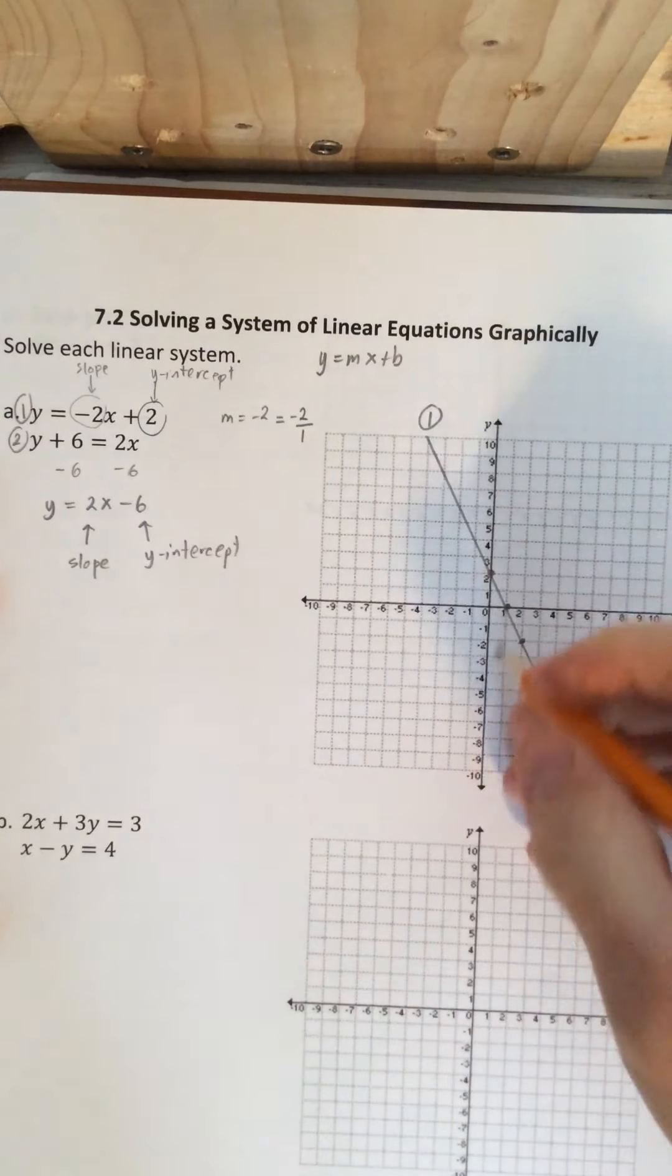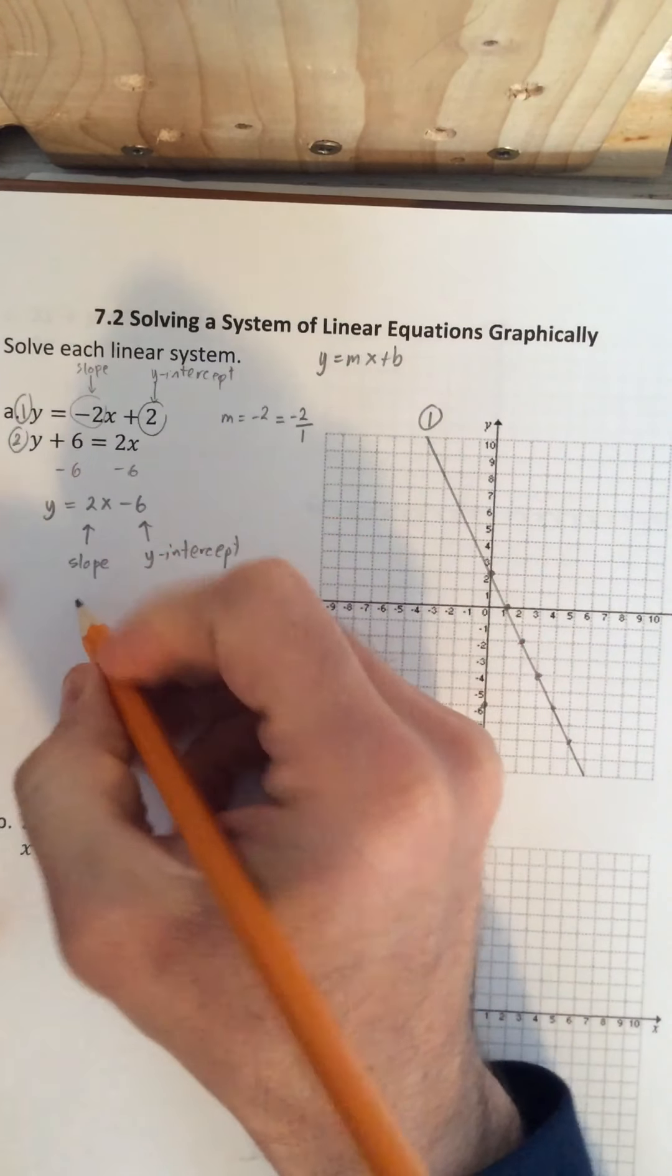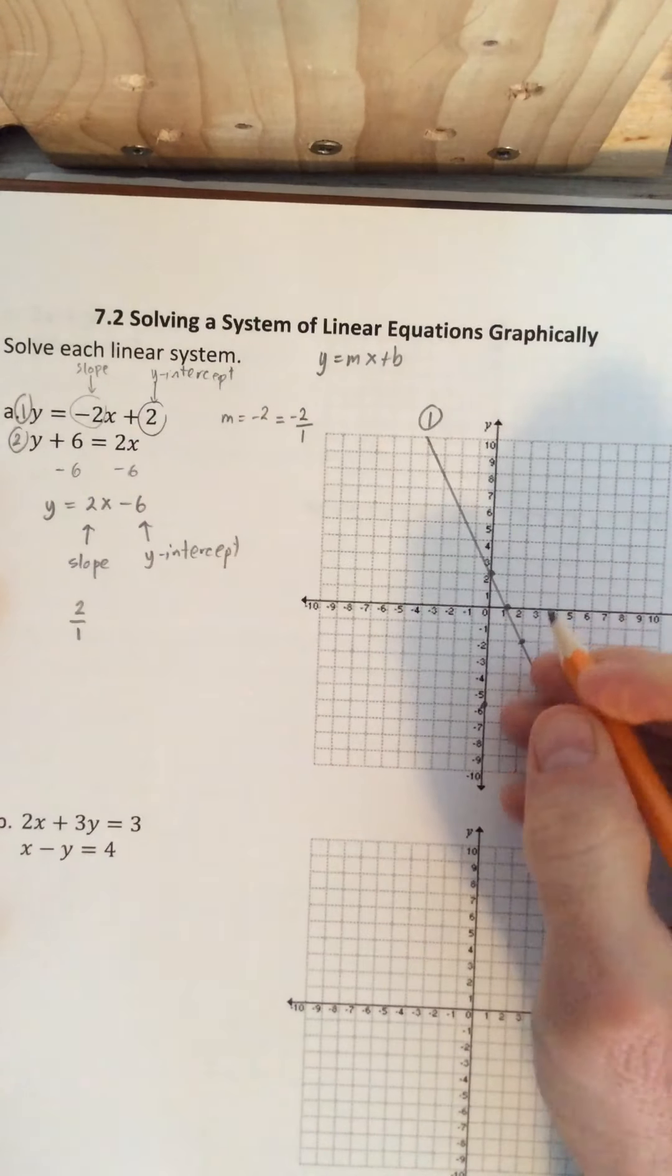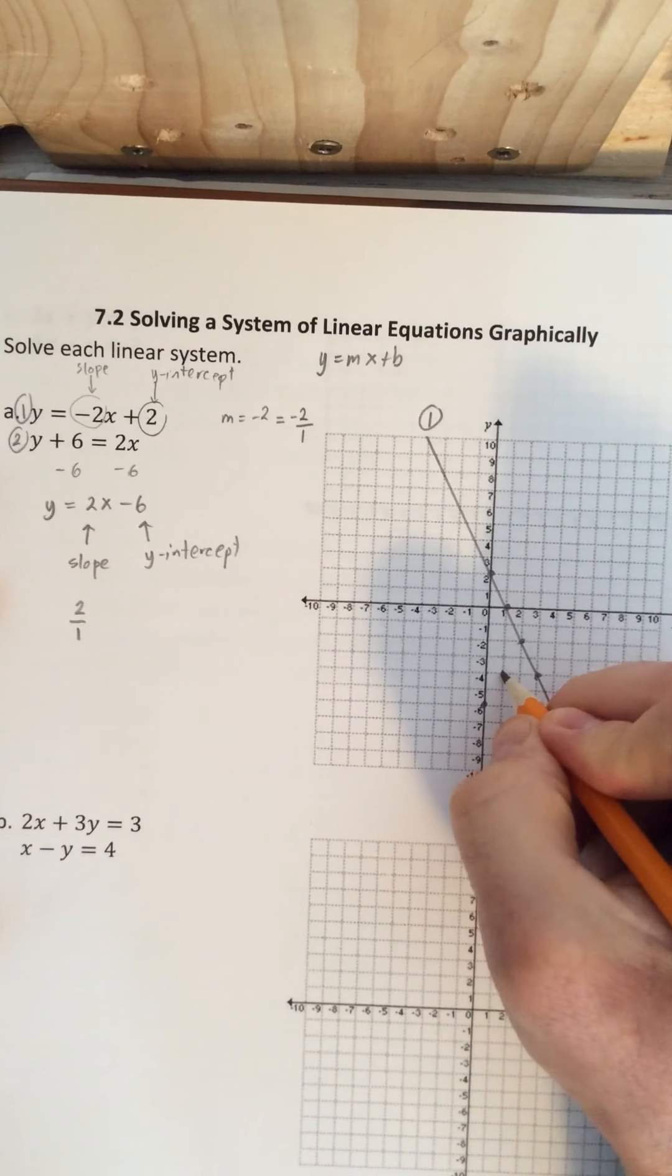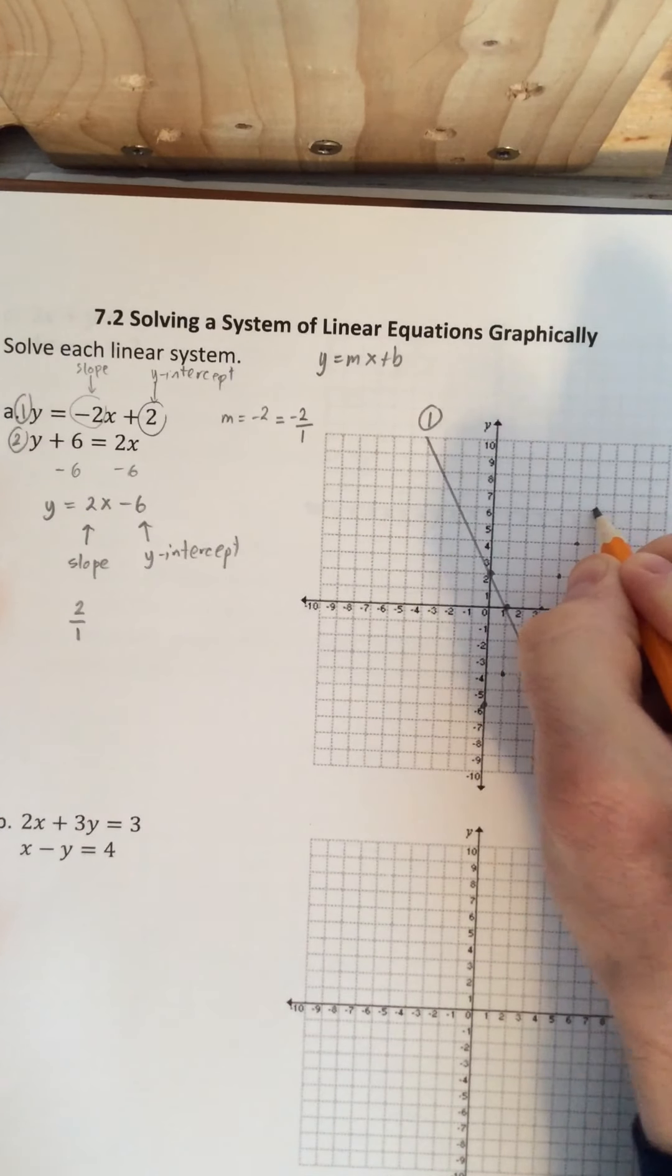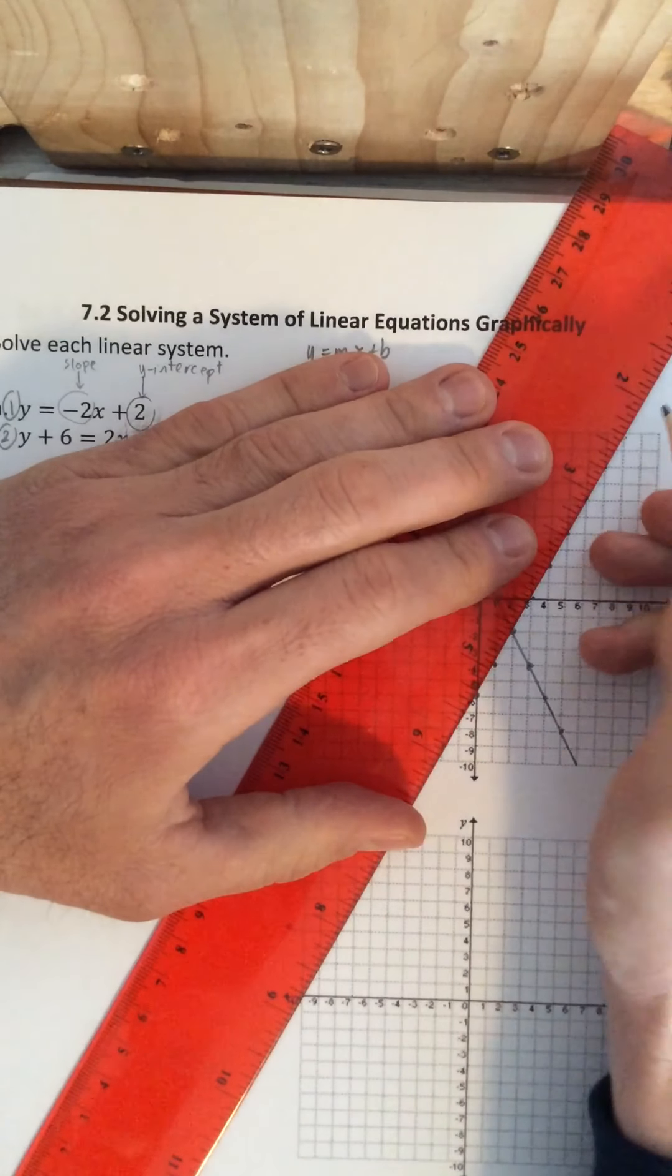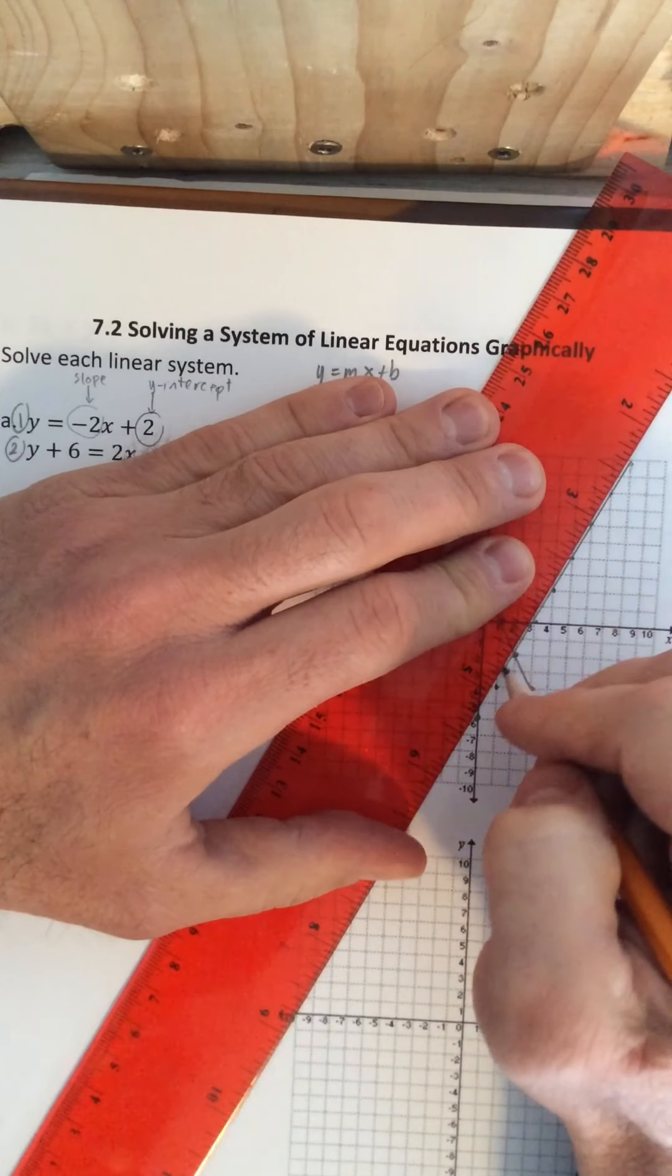So if I plot the y-intercept first, which is along the y-axis, negative 6, and then the slope is 2. If we write it as a rise over a run, it would be 2 over 1. So the slope goes up 2 and over 1 from this point. Up 2, over 1, and we again can continue this and put these points on the graph and draw a line through them. And this is going to represent the equation 2. So use a straight edge to draw these lines.